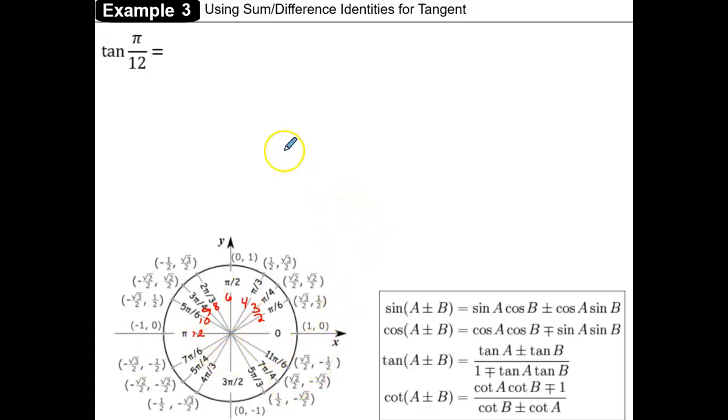Now I want two values that add or subtract to be pi over 12. Adding isn't going to be a possibility because all of these are greater than pi over 12.